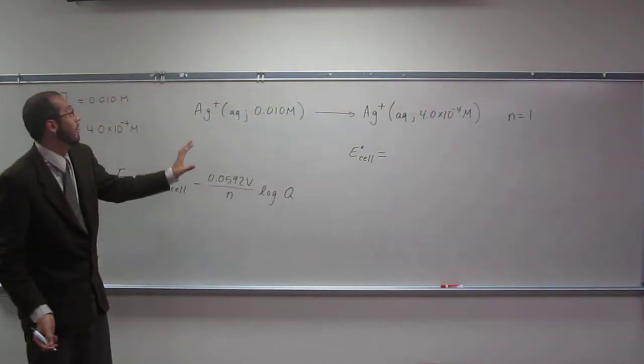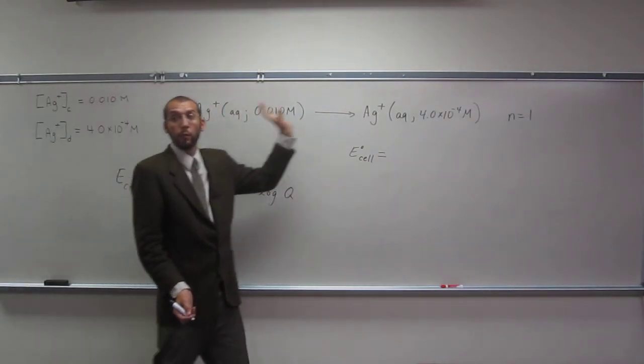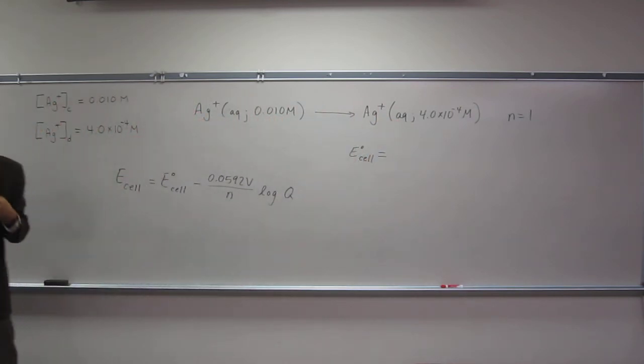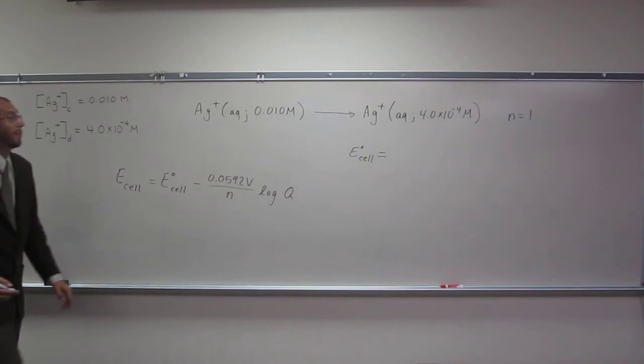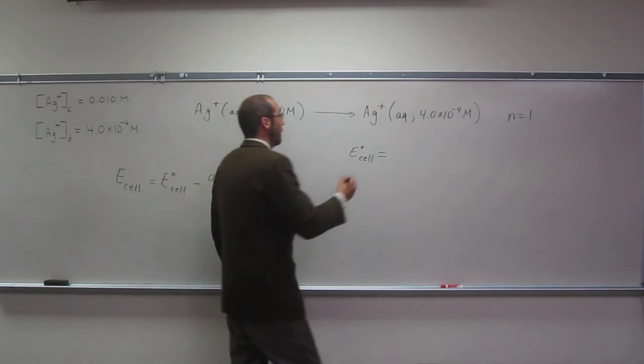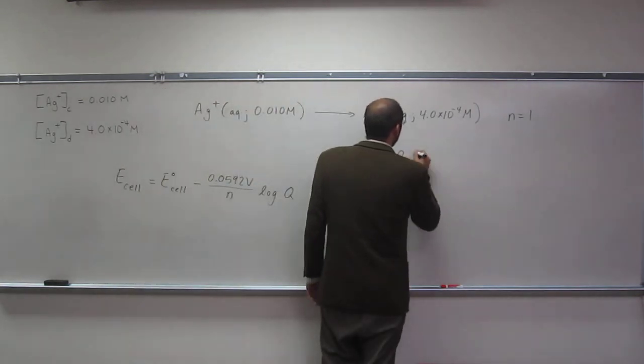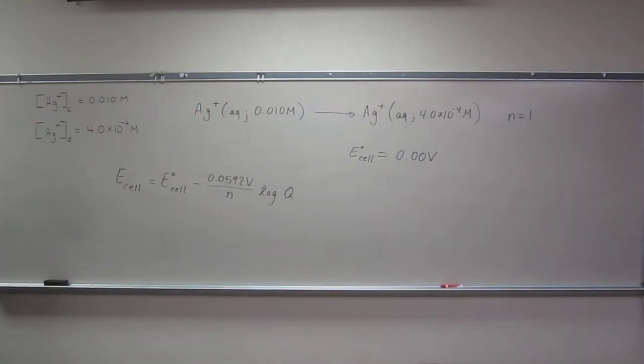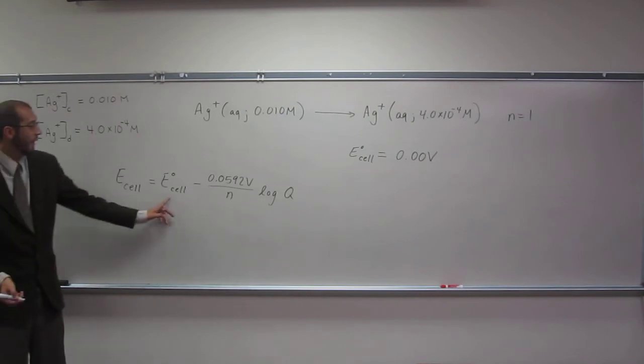So, again, like I mentioned, if we have the same thing oxidizing and reducing each other, those potentials are going to cancel out, and so it's going to be zero overall. But let's just put 0.00 volts to keep our significant figures so we won't think that we have to cut this down. So we've got that.